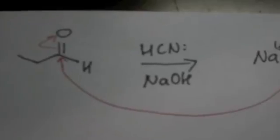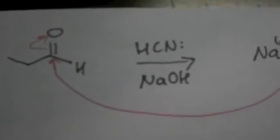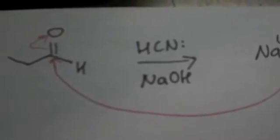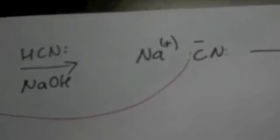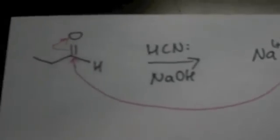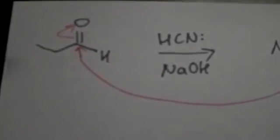The second reaction is a cyanohydrin reaction with the carbonyl compound, so we have some HCN in an NaOH solvent. What we have is a CN attacks the carbonyl carbon and the double bond cleaves and goes into the oxygen.